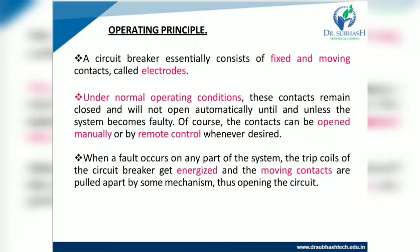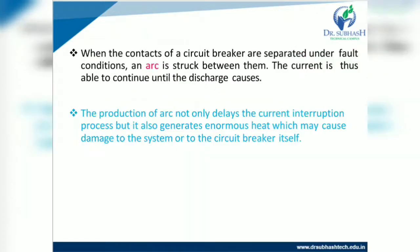A circuit breaker essentially consists of fixed and moving contacts, also called electrodes. Under normal operating conditions, these contacts remain closed and will not open automatically until and unless the system becomes faulty. Of course, the contacts can be opened manually or by remote control as desired. When a fault occurs on any part of the system, the trip coil of the circuit breaker gets energized and the moving contacts are pulled apart by some mechanism, thus opening the circuit.